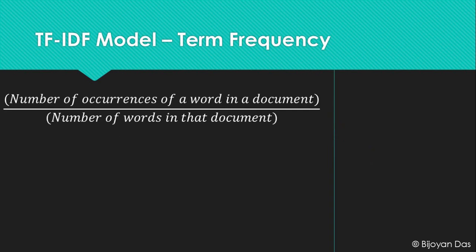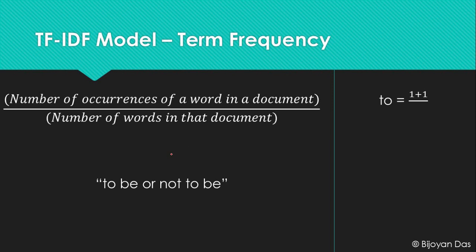Let's take the example sentence 'to be or not to be' and find term frequencies for each word. The word 'to' appears twice, so it's (1+1)/6 = 0.33. Similarly, 'be' also appears twice, giving TF = 0.33. The word 'or' appears only once, so its TF is 1/6 = 0.16. Going back to our main corpus, we can find the term frequencies for all words across all three sentences.